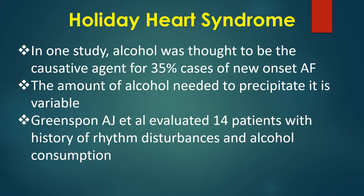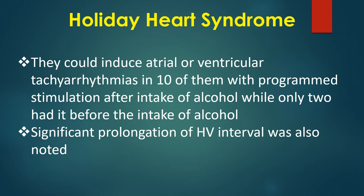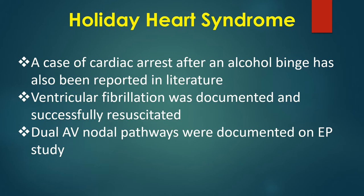In one study, alcohol was thought to be the causative agent for 35% of cases of new onset atrial fibrillation. The amount of alcohol needed to precipitate it is variable. Greenspan and Associates evaluated 14 patients with history of rhythm disturbances and alcohol consumption. They could induce atrial or ventricular tachyarrhythmias in 10 of them with programmed stimulation after intake of alcohol, while only 2 had it before the intake. Significant prolongation of HV interval was also noted.